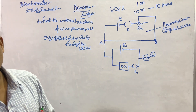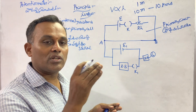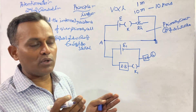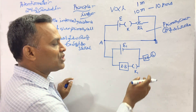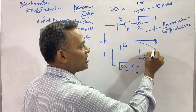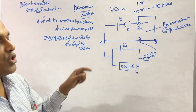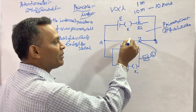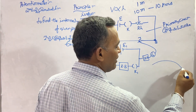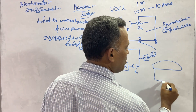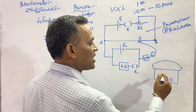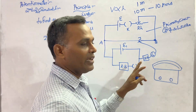A galvanometer is a device which can be used to measure both the direction and magnitude of the current in the circuit. It has a central zero, with the scale on either side.